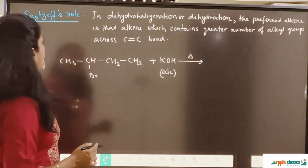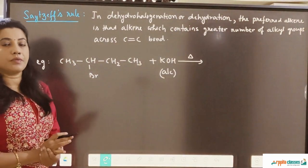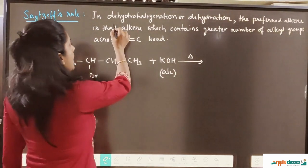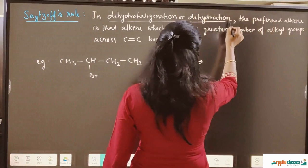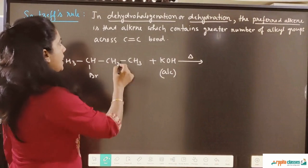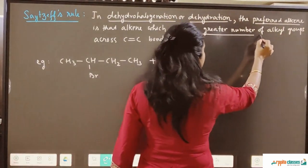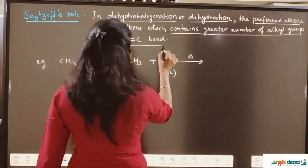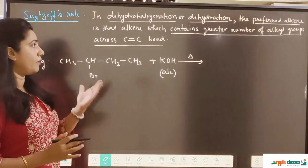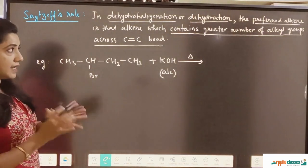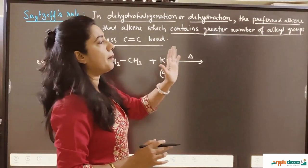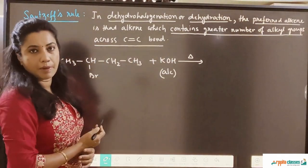We will see the next page. Regarding this reaction, we have to study one rule called Saytzeff's rule, which says that in dehydrohalogenation — also called dehydration — the preferred alkene is that alkene which contains a greater number of alkyl groups across the carbon-carbon double bond. This is a rule you have to remember exactly as it is written. In this reaction, the preferred alkene will be that which contains a greater number of alkyl groups across the C=C double bond.